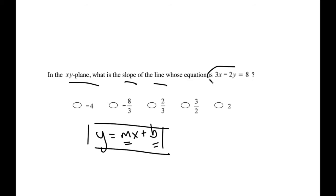So if I can manipulate this equation to look like this, y equals something, I can just see what goes in this spot and that will be our slope. So let's do it.